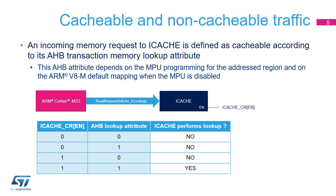The ARMv8M default mapping and also the MPU define the cache attribute that the iCache uses to determine whether a lookup has to be performed. Two conditions have to be satisfied to perform the cache lookup: AHB lookup attribute asserted and iCache enabled. In case of a non-cacheable access, iCache is bypassed, meaning that the AHB transaction is propagated unchanged to the master output port, except for the transaction address which may be modified due to the address remapping feature. The bypass and remap logic does not increase the latency of the access to the targeted memory. iCache is disabled at boot.